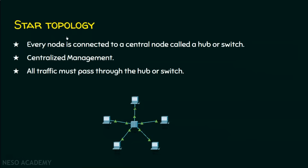Now we will see the third topology — star topology. In this case, every node is connected to each other, but not directly, with the help of a central node. This central node can be a hub or a switch. All traffic must pass through the hub or switch. If one node wants to send data to another, it sends the data to the central node, which then forwards it to the destination — other nodes cannot intercept this communication.